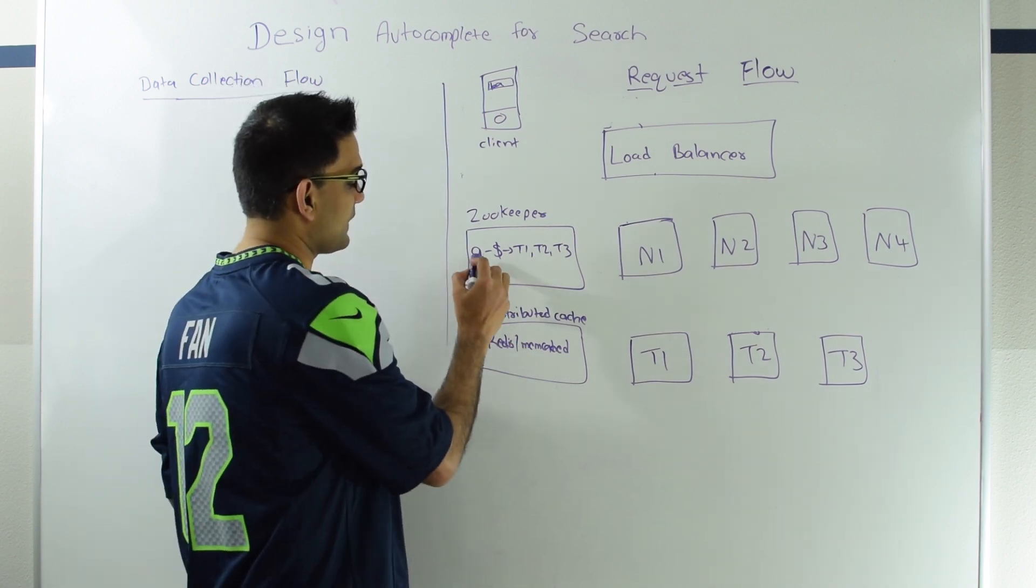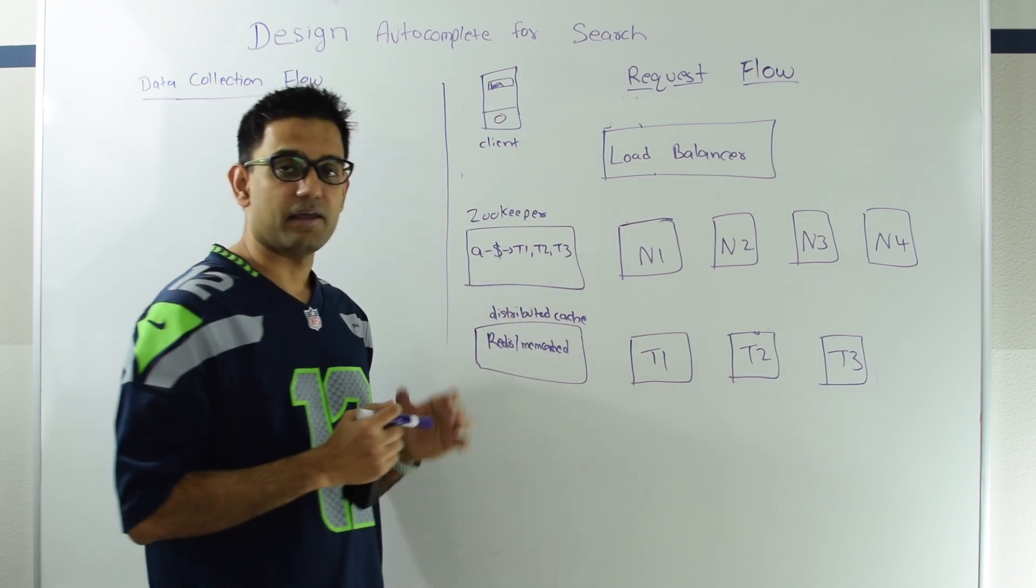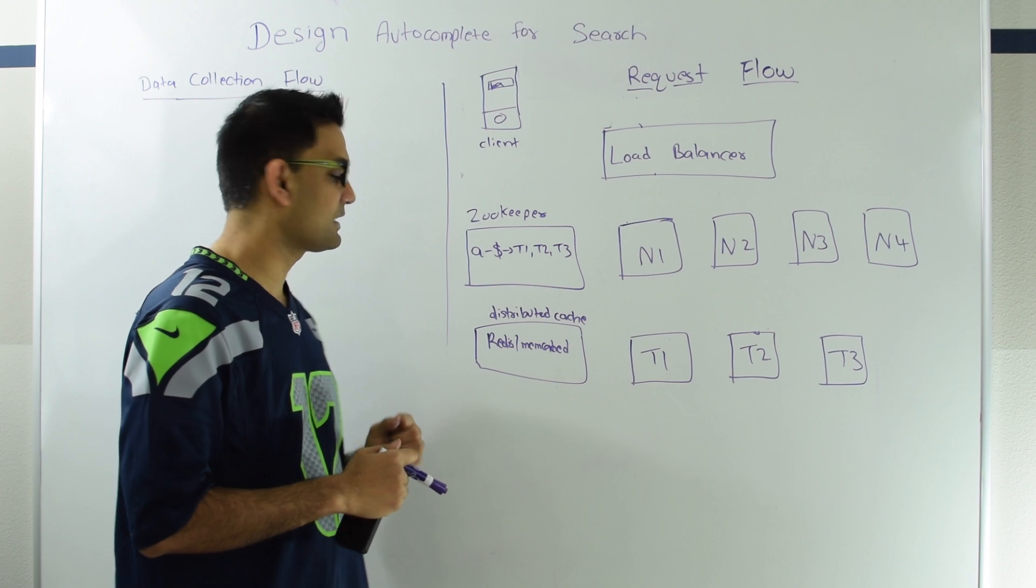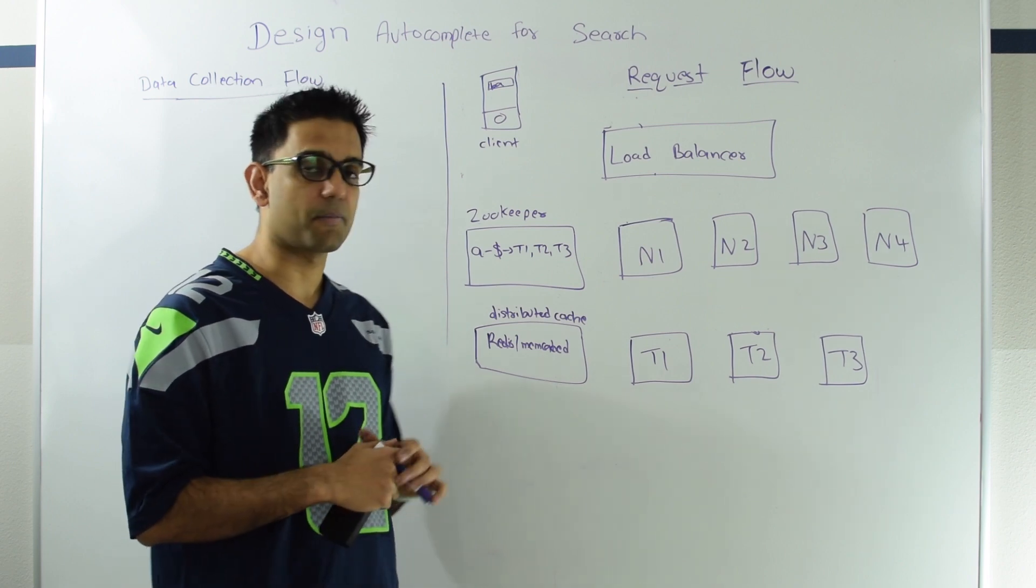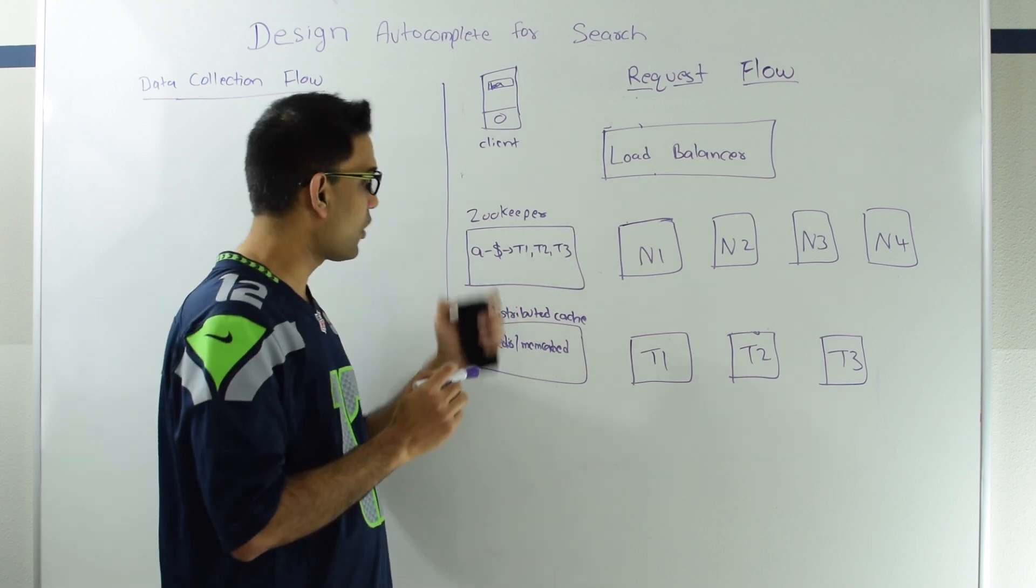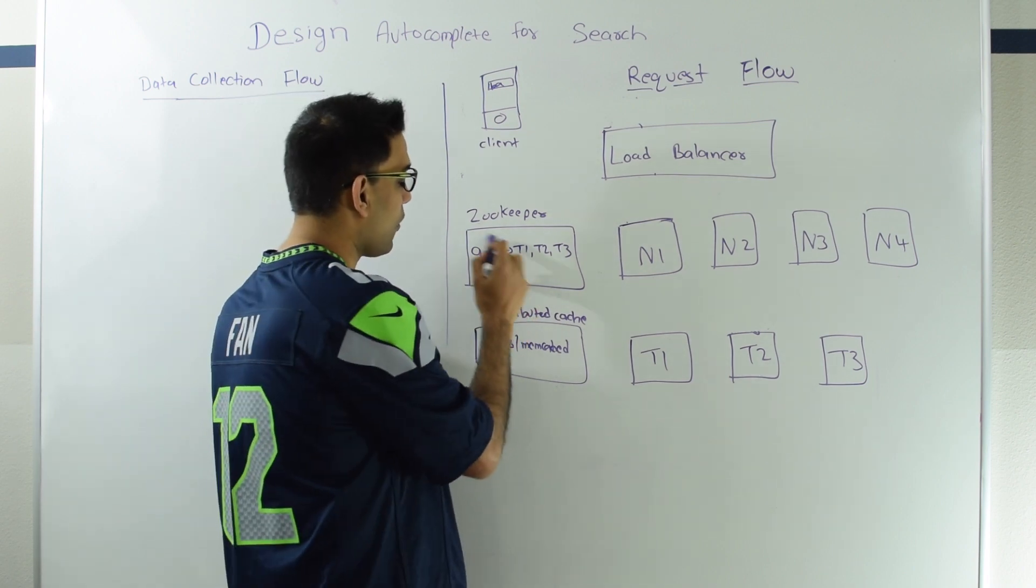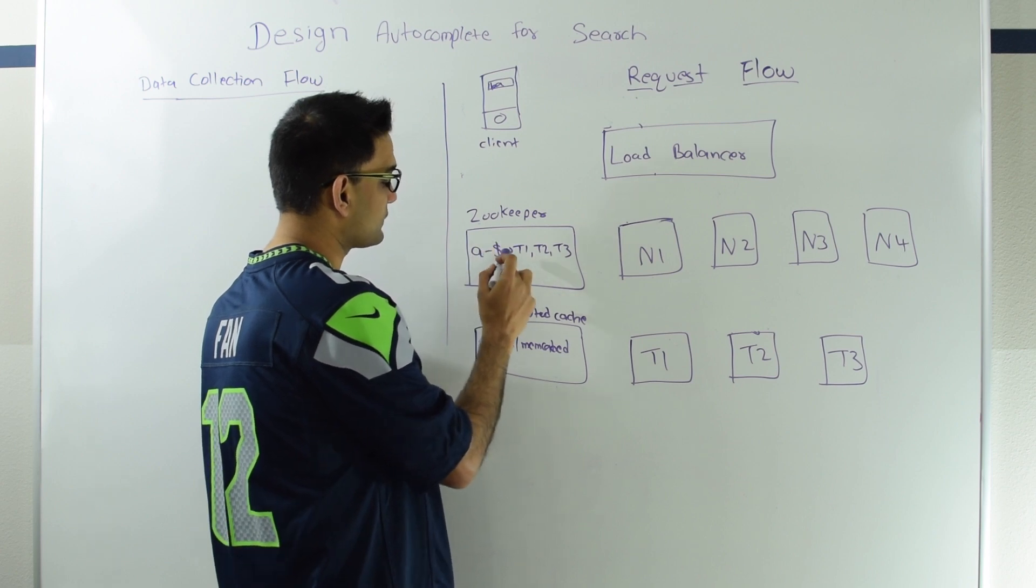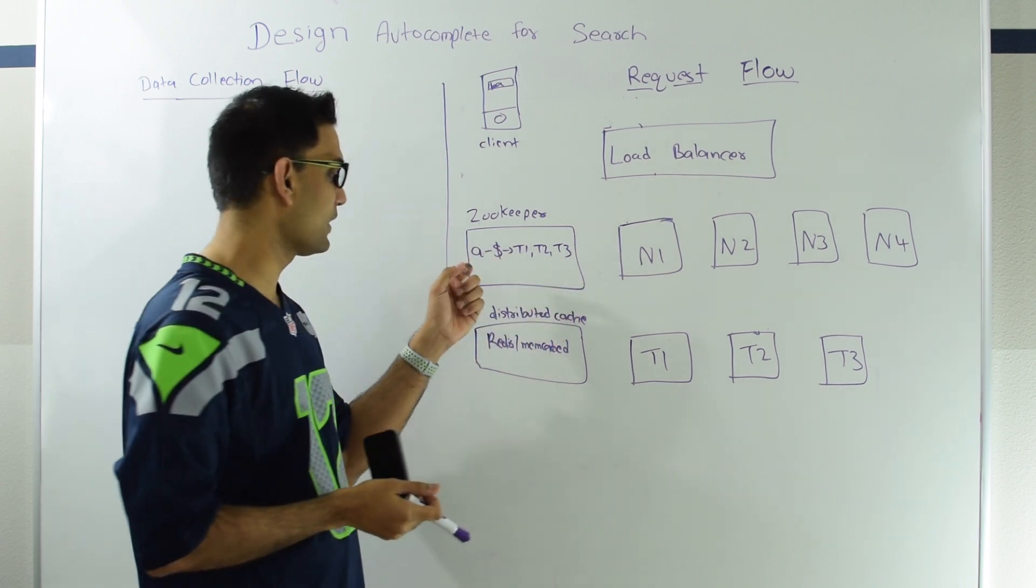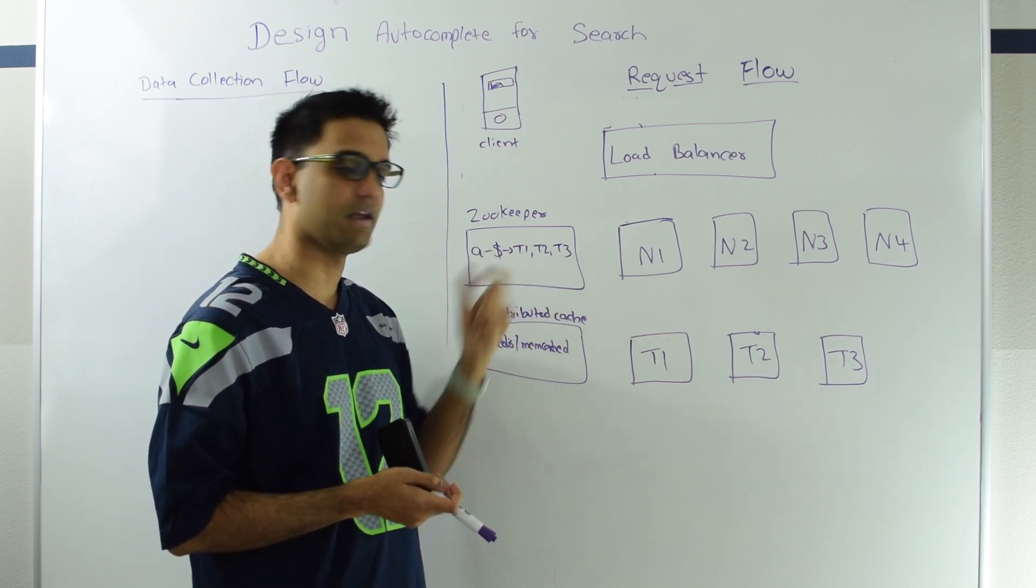This piece of information is stored in this zookeeper instance. What we are saying is that starting from prefix a all the way to the last character (dollar is our last terminal character), all the prefix or the trie is in T1, T2 or T3. So anyone looking for the prefix between a to dollar should look into either of the three nodes.